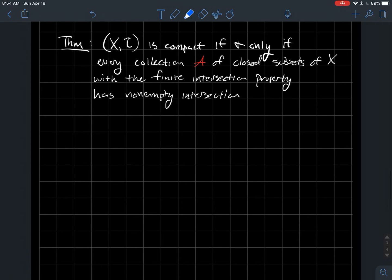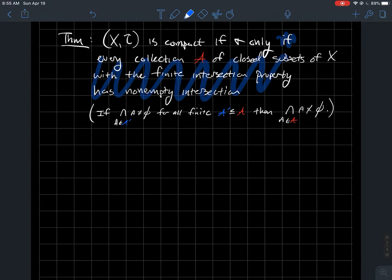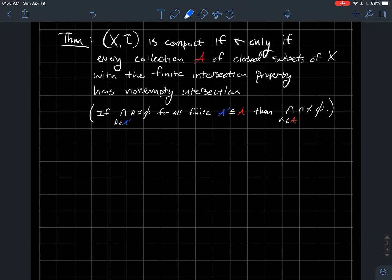A way to tell if a space is compact, another characterization of compactness: (X, τ) is compact if and only if every collection fancy A of closed subsets of X that has the finite intersection property also has a non-empty intersection. What does this mean in symbols? If the intersection of all A in some finite subcollection is non-empty for any finite subcollection you take, then the intersection of all things in your family must be non-empty.